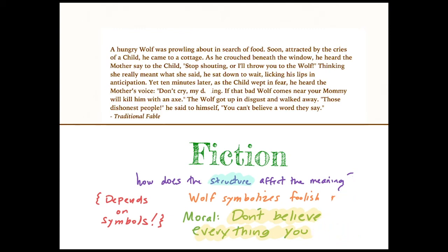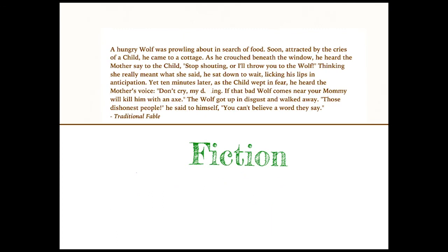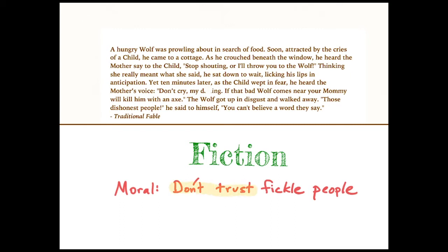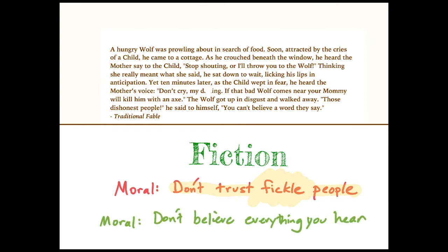However, a different reader might start with the opinion that they agree with the wolf. This mother said one thing, and just a minute later she completely changed her mind. So the moral of the story could be: don't trust people who change their minds easily. Which moral is correct? There is no single right answer. Both of those could work — both answers seem to match the paragraph.